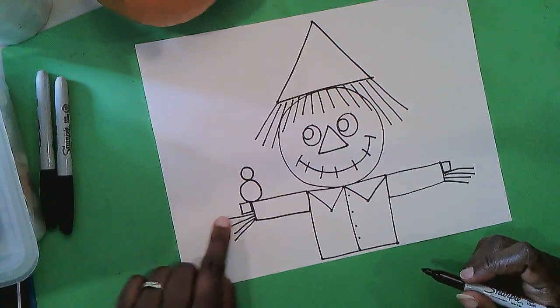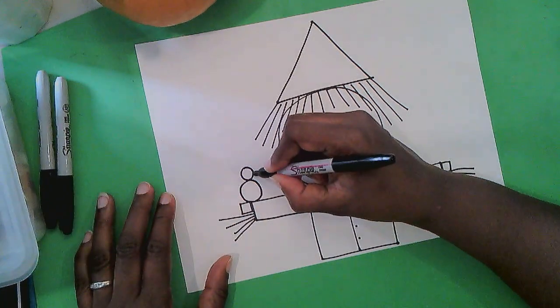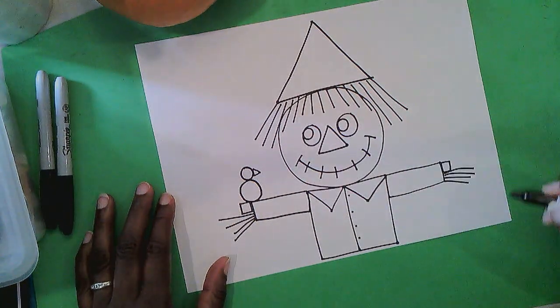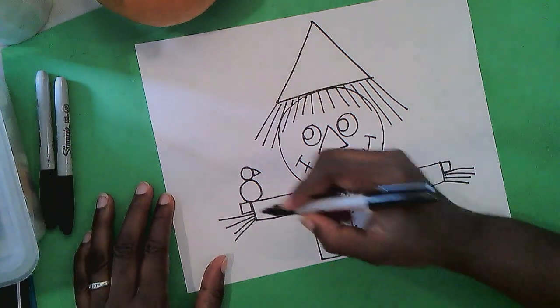I have two circles there. One, two. Let's add a little triangle on the side. Yes, you guessed it. It's a bird.